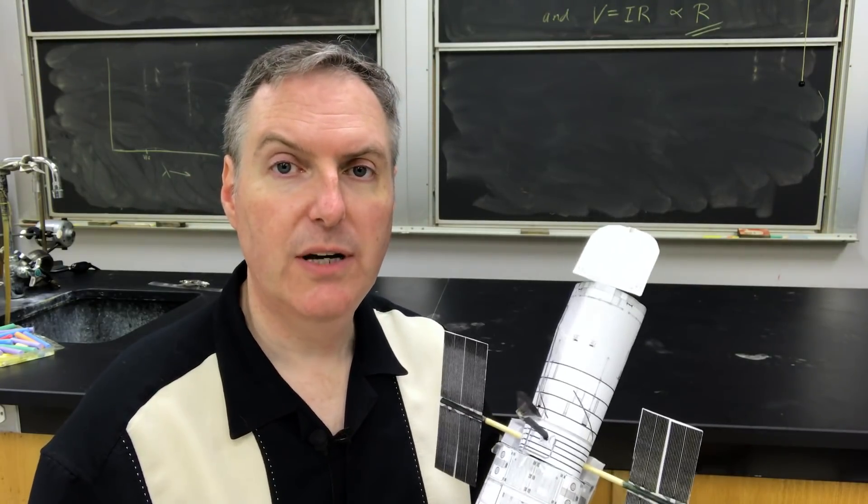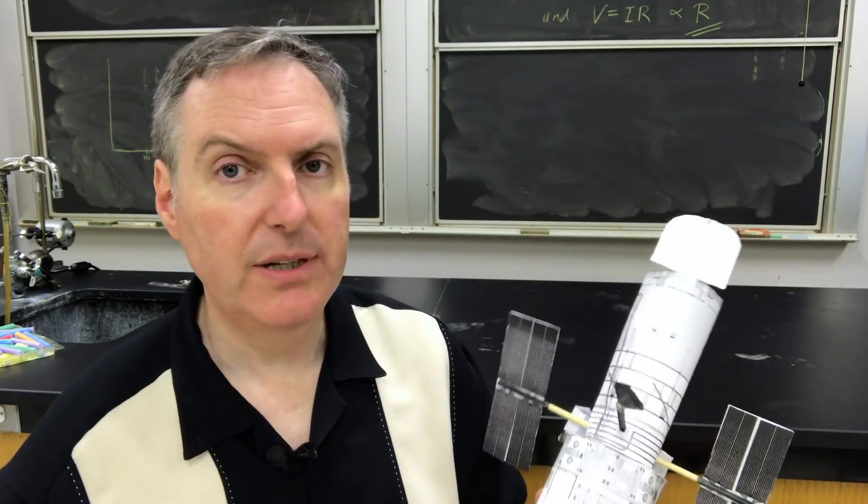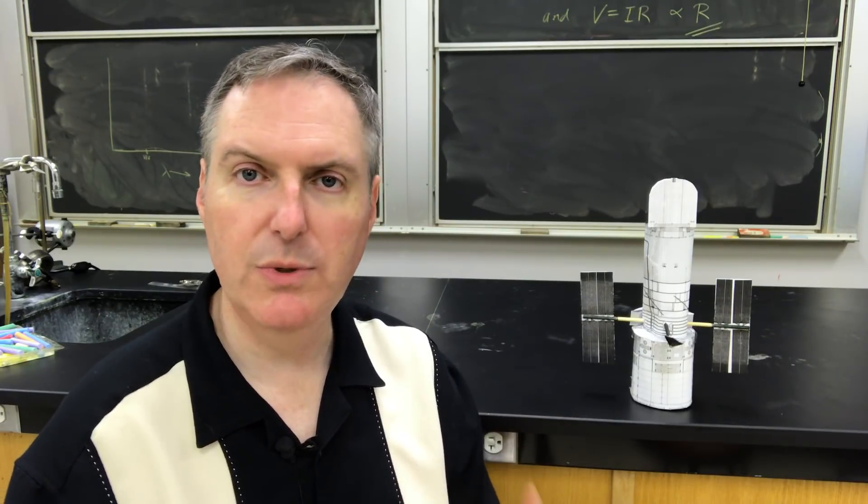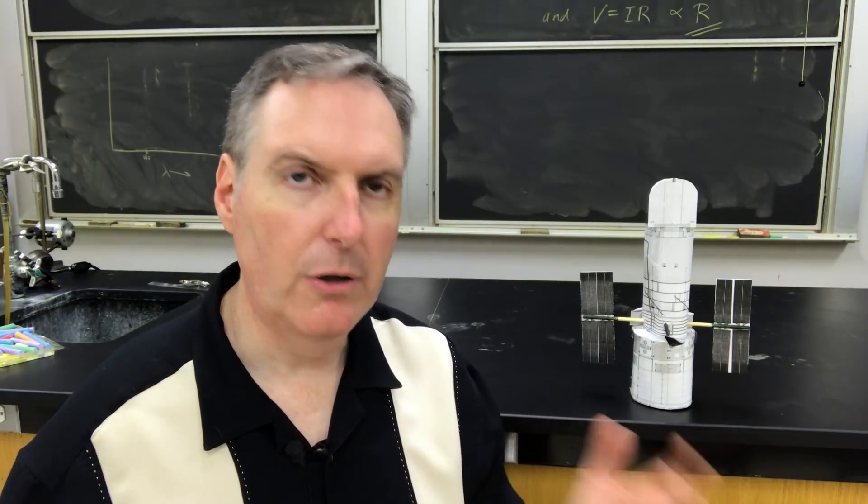On Friday, one of the three gyros failed. Now normally that wouldn't be a problem because Hubble is normally outfitted with six gyroscopes. Since it was launched in 1990, Hubble has been upgraded on five different occasions. These servicing missions would be used to upgrade the telescope, giving it new capabilities, new instruments, and on almost every single mission, at least one pair of gyroscopes had to be replaced.